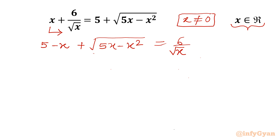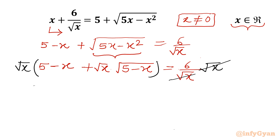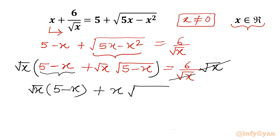Now I can take x common from inside the square root. So I will write (5 − x) + √x · √(5 − x), and the RHS is 6 over √x. Multiplying both sides by √x, the √x cancels on the right, giving √x·(5 − x) + x·√(5 − x) = 6. This is our radical equation where I will use substitution.